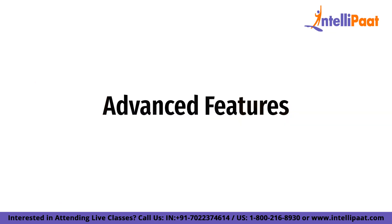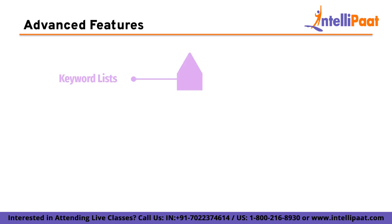Now let us look at some of the advanced features of Google Keyword Planner. Google Keyword Planner offers several advanced features that can help advertisers create more effective and efficient ad campaigns. One of these features is keyword lists. With Keyword Planner, you can create keyword lists based on specific themes or topics. This can help you keep your keyword research organized and make it easier to group keywords into campaigns and ad groups.